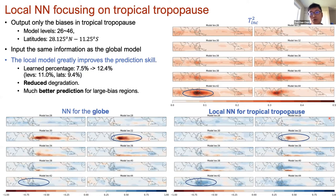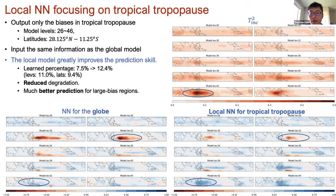We investigated the tropical tropopause region by training a local neural network focusing only on that region. The target temperature increment is largest at the model level right above the maritime continent. The previous global neural network not only failed to predict well in the large-biased region but also degraded badly elsewhere. With the local neural network, we reduced degradation and improved prediction over the large-biased region. This suggests that our global neural network complexity may be insufficient, at least for the tropical tropopause region.